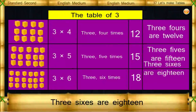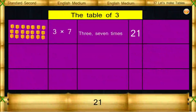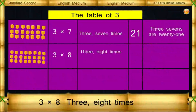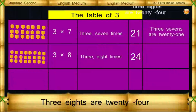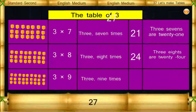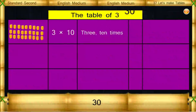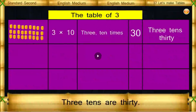3 7's are 21. 3 8's are 24. 3 9's are 27. 3 10's are 30.